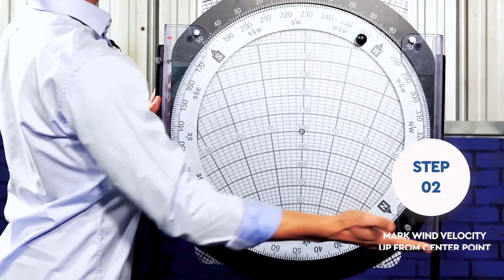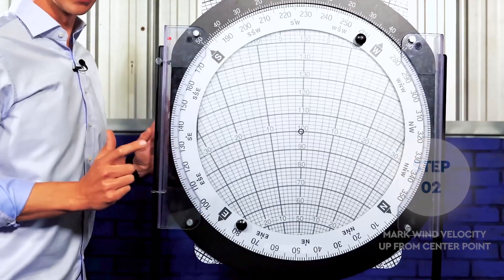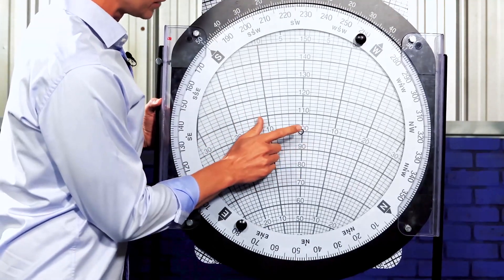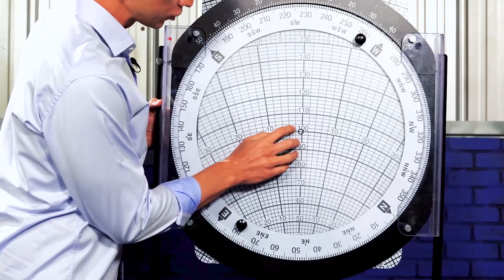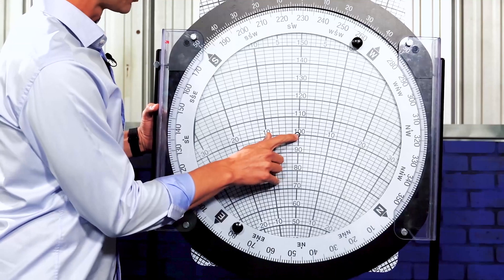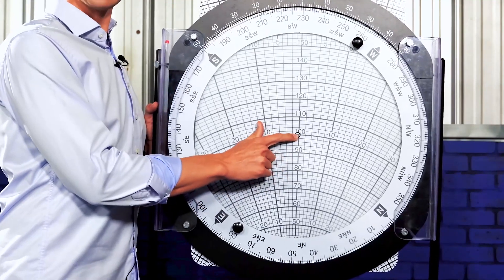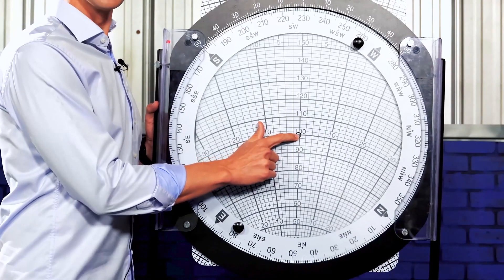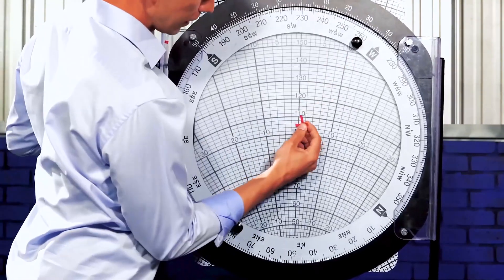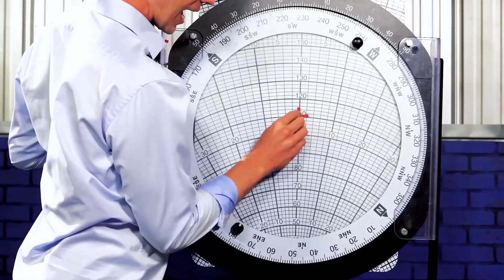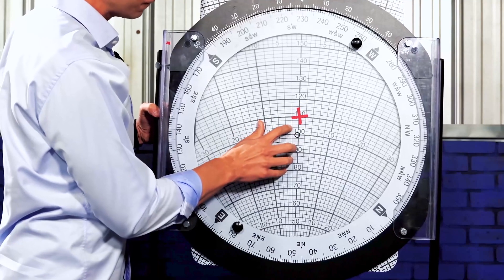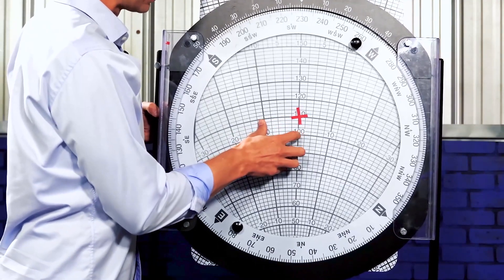Step one was to mark wind direction under the true index. True index, wind direction, 230. Step two that's magically appearing on your screen right here is to mark your wind velocity up from the center point. I cheat a little bit on this, and let me show you how. Mark wind direction up from our center point. So typically, you take from the center point, and you just count up. And you can see these lines. That'd be 2, 4, 6, 8, 10. I start with the center point on 100 to make my life just very easy. So our wind was what again? It was 230 at 10.